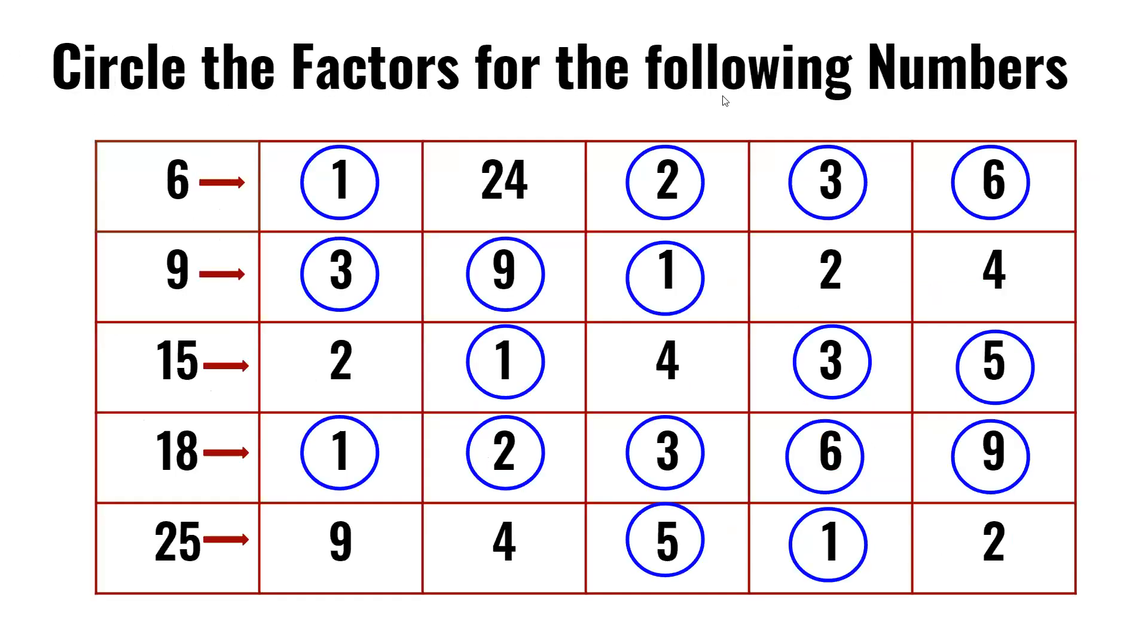Circle the factors for the following numbers. On the first row, we have to circle the factors of 6. We have 1, 24, 2, 3, and 6. Since 24 is bigger than 6, it is most likely not the factor of 6. We all know 1 times 6 is 6, and 2 times 3 is 6. So 1, 2, 3, and 6 are the factors of 6.